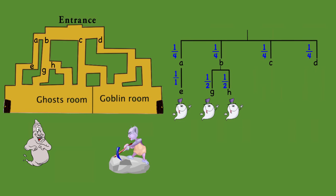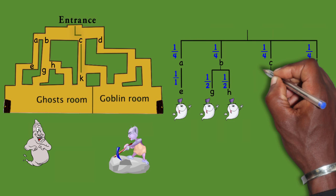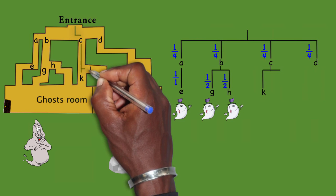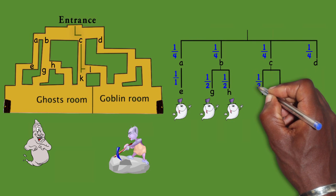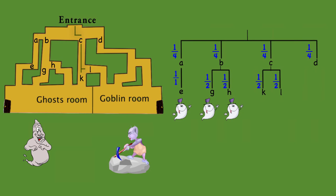And then for path C, if you decide to head down path C, you get here, you can either go straight or you can take a left. So you have two options, you have a 50% chance. If you choose path K, you're already at the ghost room. If you choose path L, there's no more decisions to make. You end up in the goblin room.